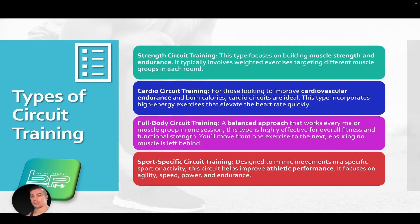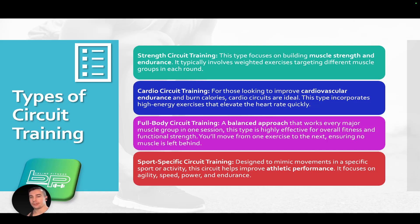There are many types of circuit training. Strength circuit training focuses on building muscle strength and endurance, typically involving weighted exercises targeting different muscle groups in each round. Cardio circuit training is for those looking to improve cardiovascular endurance and burn calories, incorporating high-energy exercises that elevate heart rate quickly. Full-body circuit training is a balanced approach that works every major muscle group in one session.